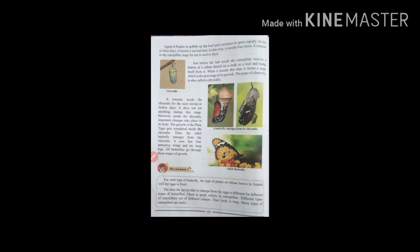It remains in the caterpillar stage for ten to twelve days. Then the caterpillar stops eating. It welds a button of silken thread on a stalk or leaf and hangs itself from it. This time when it molts, it forms a pupa, which is the next stage of growth.